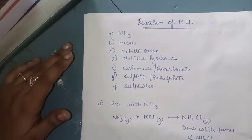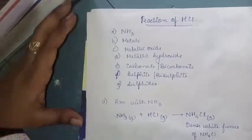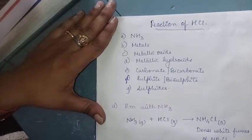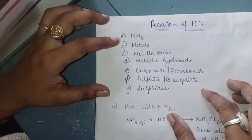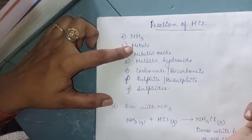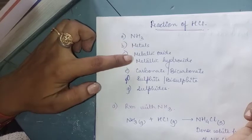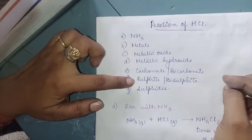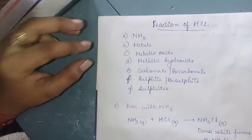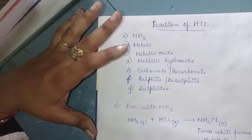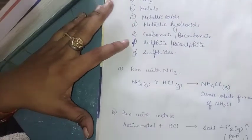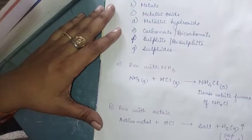Good morning students. Today we are going to start with the next part of the hydrochloric acid chapter — the reactions of hydrochloric acid. The reactions we have to study are: with ammonia, metals, metallic oxide, metallic hydroxide, carbonate, bicarbonate, sulfite, bisulfite, and sulfides. We will study by remembering the word equation and then substituting the reaction.